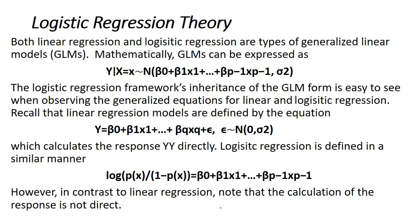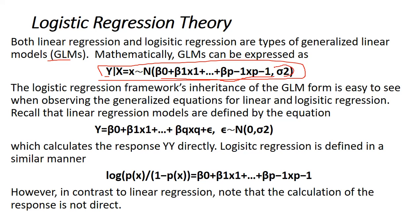Both linear regression and logistic regression are types of Generalized Linear Models (GLMs). Mathematically, in GLMs, y is the dependent variable and x is the independent variable, where x given y follows a normal distribution with parameters beta_1 plus other independent variables and sigma squared. The logistic regression is defined as: log(p(x) / (1 - p(x))), which predicts our probabilities.